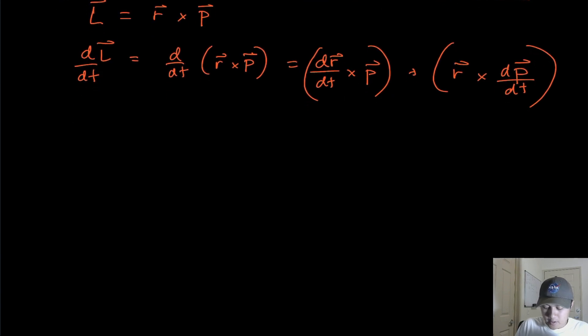Now, the only way we can simplify things is just letting dr/dt, right? It's just the change of the position with respect to time. We know that as our good old velocity vector. And we also know that momentum is defined to be mass times velocity.